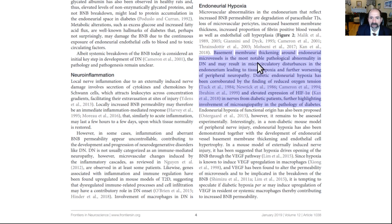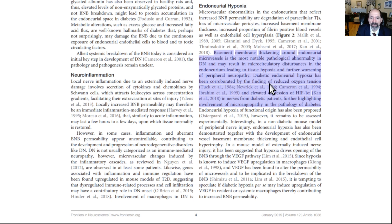Here's an article about diabetes and its effect on the blood-nerve barrier in a peripheral nerve. Basement membrane thickening around micro vessels around a nerve is the most notable pathological abnormality in diabetic neuropathy, and may result in microcirculatory disturbances leading to tissue hypoxia. Diabetic neuropathy is partly ischemic, meaning due to lack of blood flow. Diabetic endoneural hypoxia has been corroborated by the finding of reduced oxygen tension. This damage to small capillaries is called microangiopathy of diabetes, or microvascular disease of diabetes.